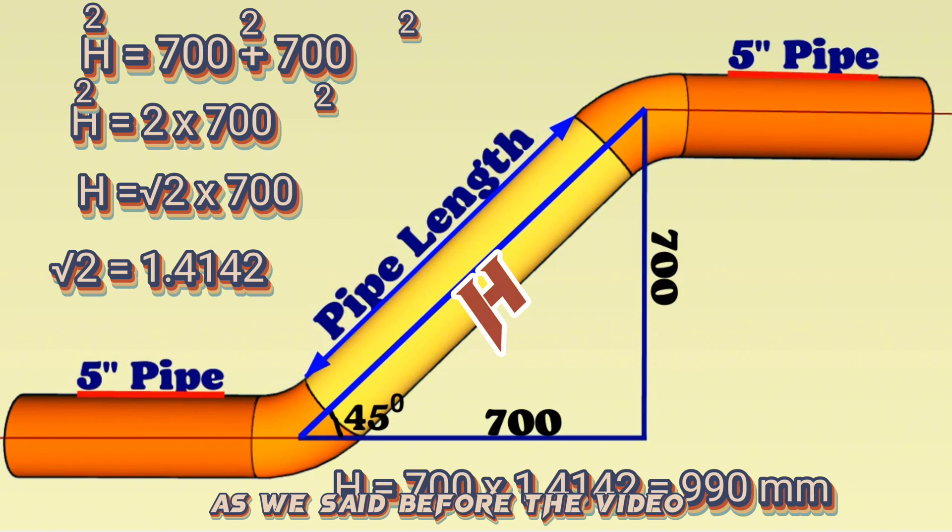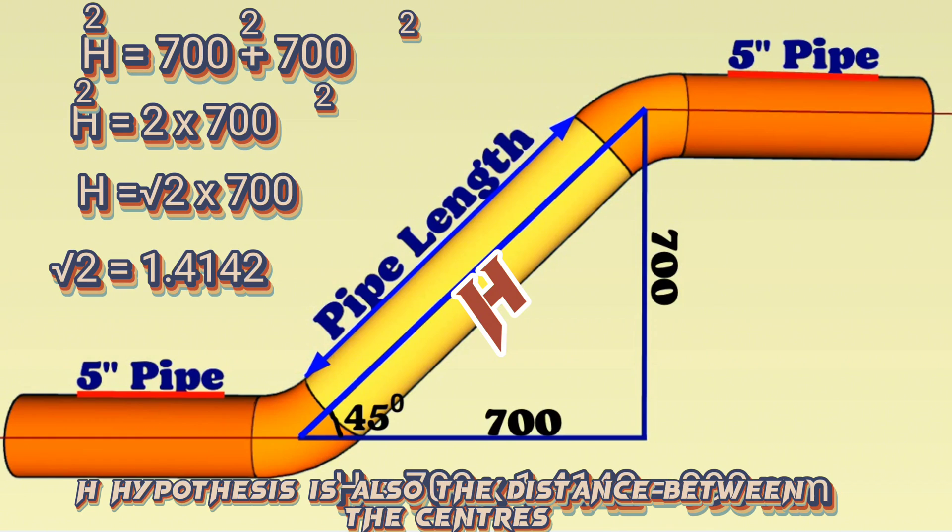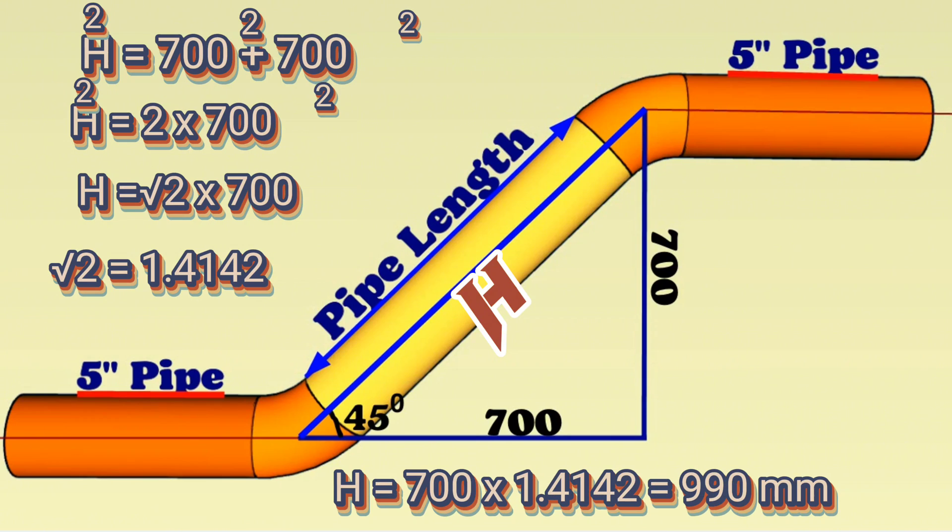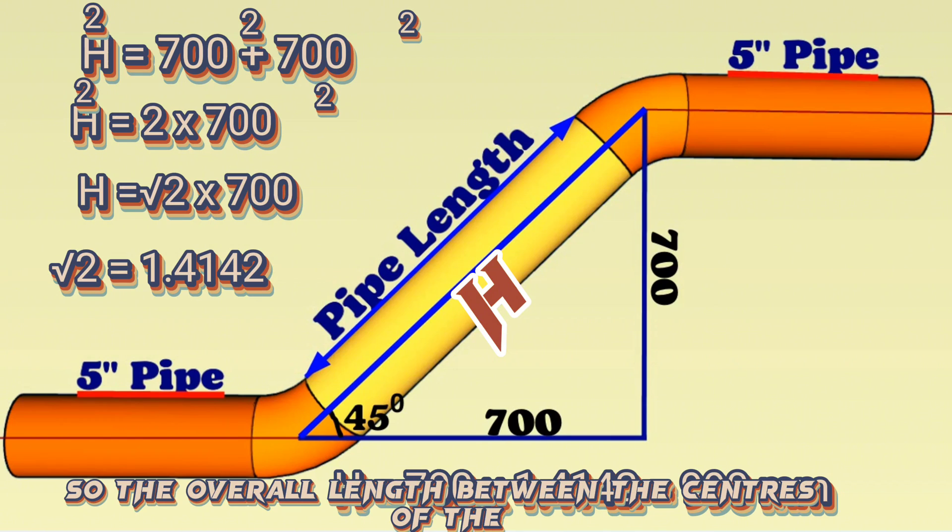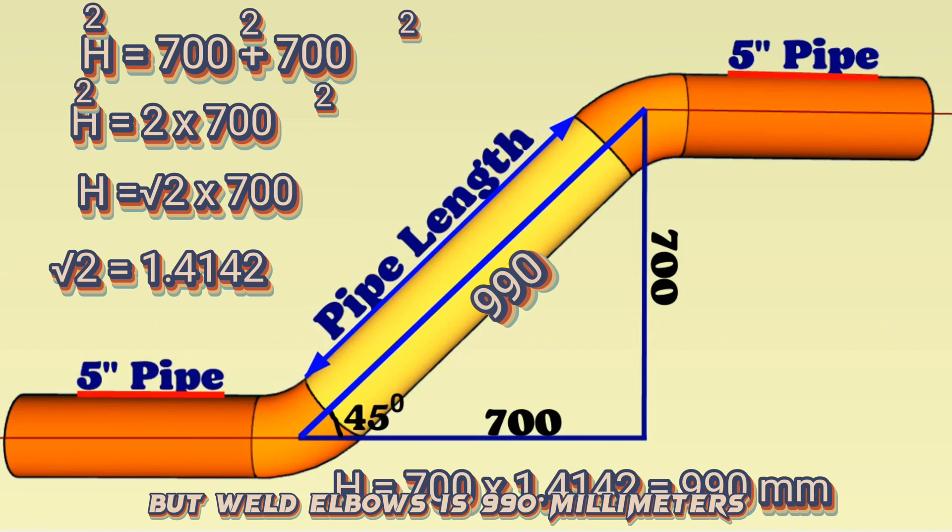As we said before in the video, the length of the H-hypotenuse is also the distance between the centers of the 45-degree butt-weld elbows. So, the overall length between the centers of the butt-weld elbows is 990 millimeters.